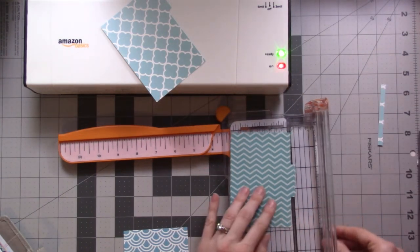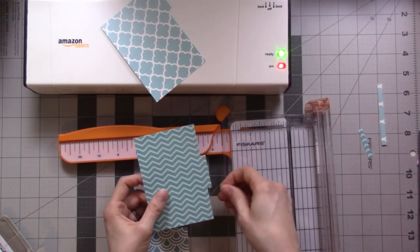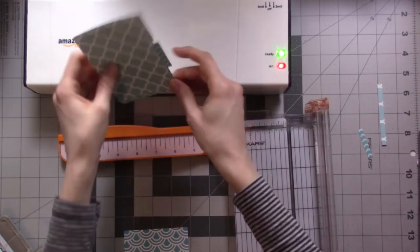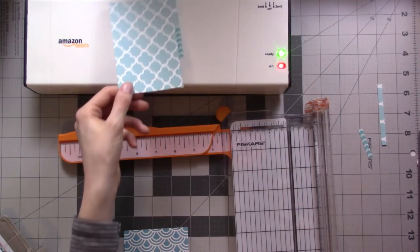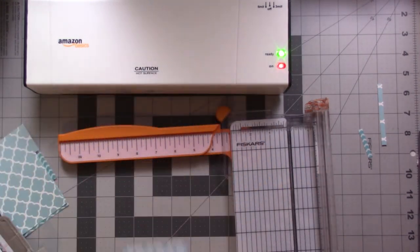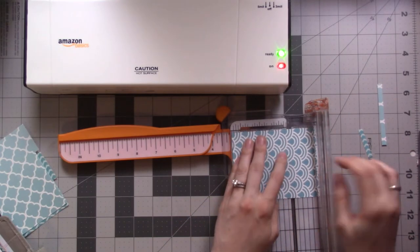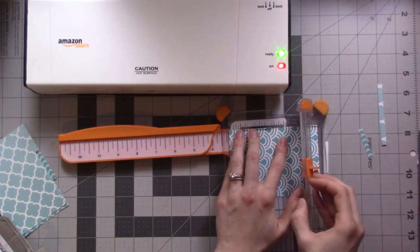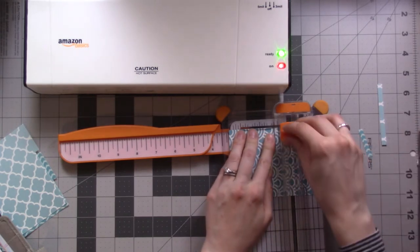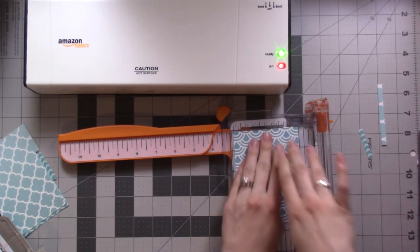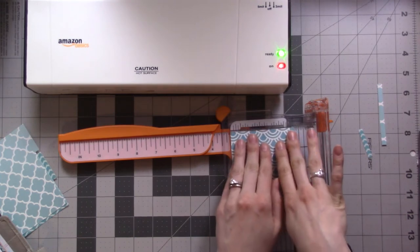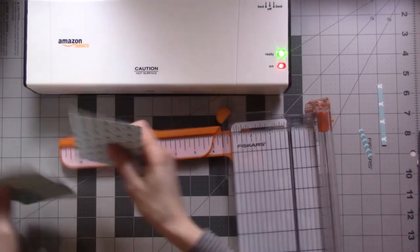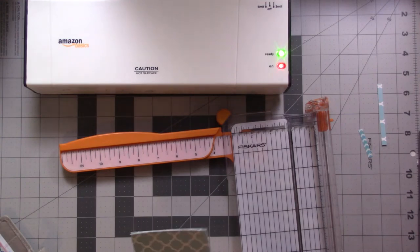The thing about this with the lamination is that even if I don't do it perfectly, it's not going to have a notch in it because it'll be laminated. The heat is making this paper curl, that's weird. Three and an eighth.